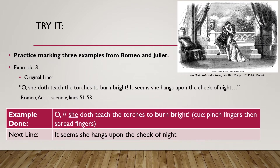Our final example comes from act one, scene five. Romeo has just asked a serving man, 'What lady is that which doth enrich the hand of yonder knight?' The serving man says he doesn't know, and so Romeo begins speaking, maybe to the servant or to himself. Romeo says, 'Oh, she doth teach the torches to burn bright. It seems she hangs upon the cheek of night.' Now listen to my oral interpretation: 'Oh... she doth teach the torches to burn bright.'